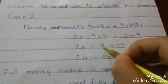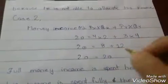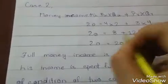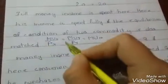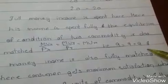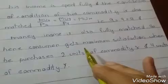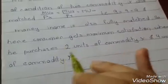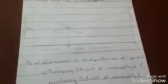4 into 2 is equal to 8, 3 into 4 is equal to 12, and when we add 12 and 8, the answer is 20. That is, here the whole consumer equilibrium case is attained. The commodity condition is also matched: MUX upon price PX is equal to MUY upon price PY is equal to MUM, that is, 9 is equal to 9 is equal to 9, and money income is also fully matched. So here consumer gets maximum satisfaction when he purchases 2 units of commodity X and 4 units of commodity Y.